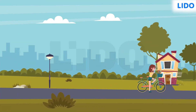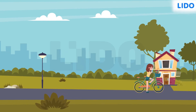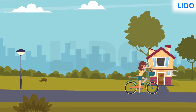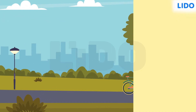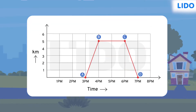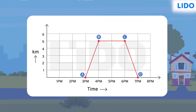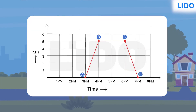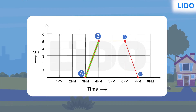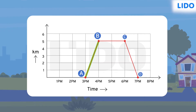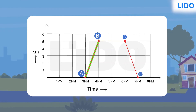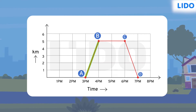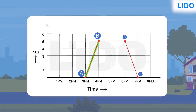What you have just seen is the formation of a distance-time graph. We see the distance travelled by Shweta shown by line AB is a straight line. This shows that Shweta is travelling at a constant speed.